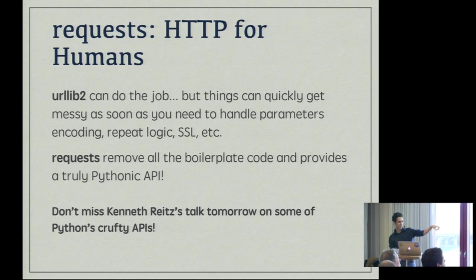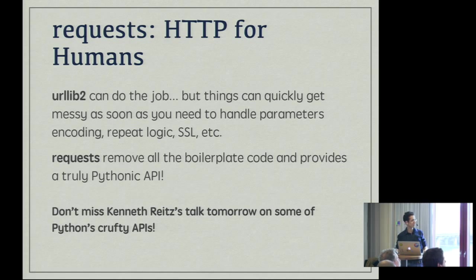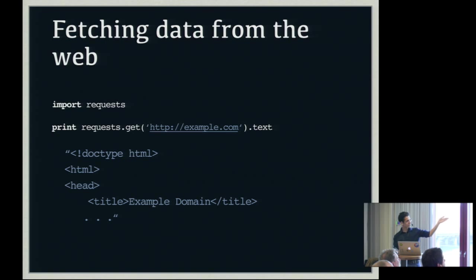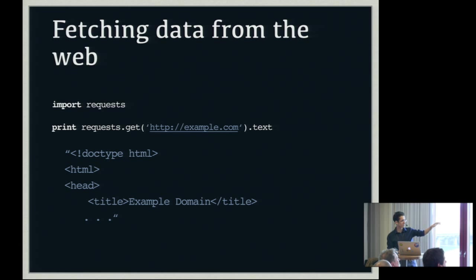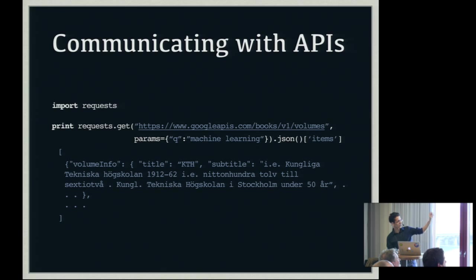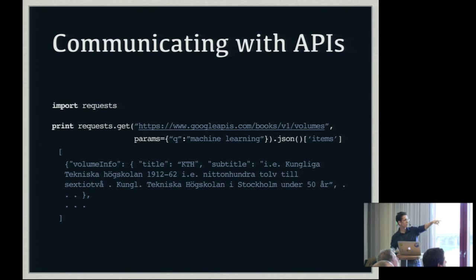The first one is Requests, a library that wraps around urllib2 and some other Python built-ins to let you do HTTP requests really easily without a lot of boilerplate code. Kenneth Reitz — who's going to give a talk on APIs — created Requests, which is well known for its really Pythonic and simple API. Fetching a webpage is really easy: you just do requests.get, write the URL, and get the text. More usefully, you can communicate with REST APIs — like fetching Twitter likes or data from an enterprise API — without having to encode parameters yourself in the URL.